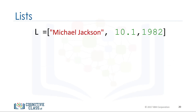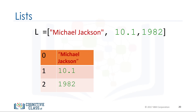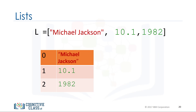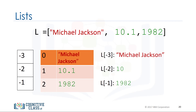Like tuples, each element of a list can be accessed via an index. The following table represents the relationship between the index and the elements in the list. The first element can be accessed by the name of the list followed by a square bracket with the index number — in this case, zero. We can access the second element as follows, and we can also access the last element. In Python, we can use a negative index.